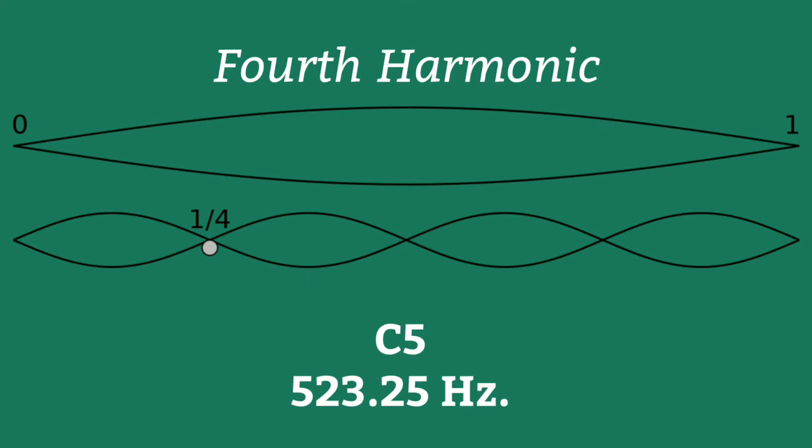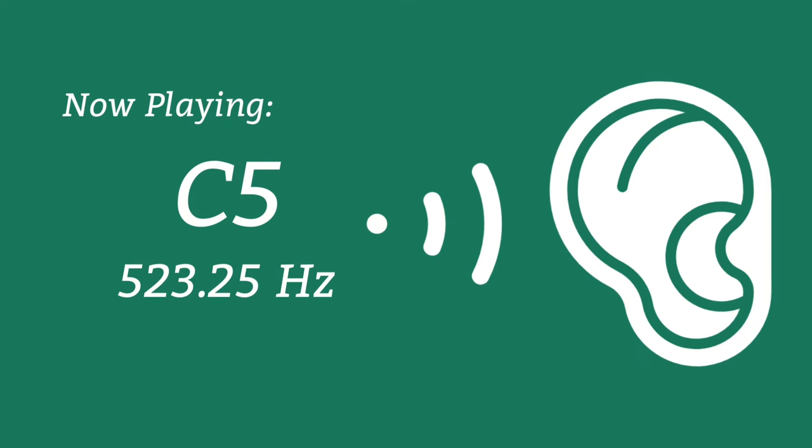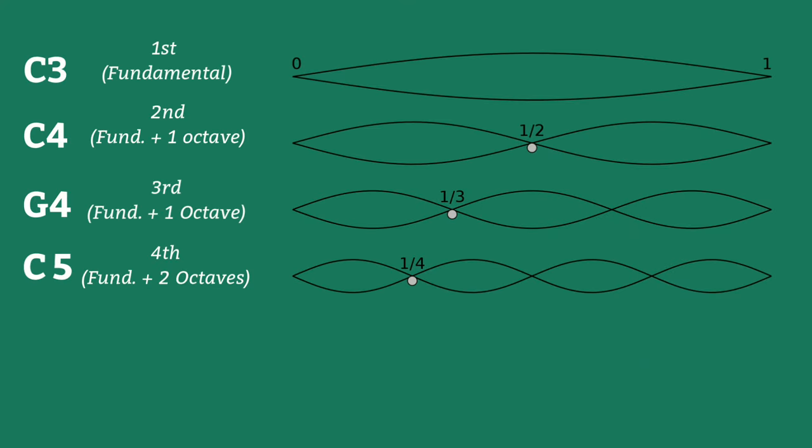The fourth harmonic is four times the frequency of the fundamental, and accounts for one-fourth of the string's length. We hear this as two octaves above the fundamental, or in this case, C5.